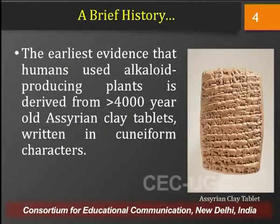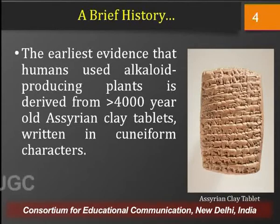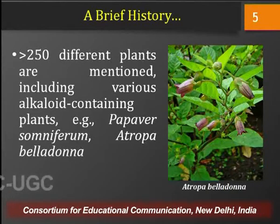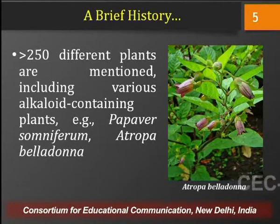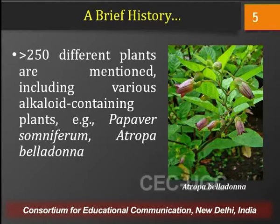Alkaloids are perhaps one of the oldest chemical compounds or phytoconstituents that are being used by mankind. This fact is further substantiated by the fact that more than 4000-year-old Sumerian clay tablets, when they were discovered, had descriptions of many plants written in cuneiform characters — a pictorial form of language. More than 250 medicinal plants were described on those plates, and amongst those 250 plants, many were plants that contain alkaloids as the major constituent, worth mentioning being Papaver somniferum, which is opium or poppy, and Atropa belladonna.